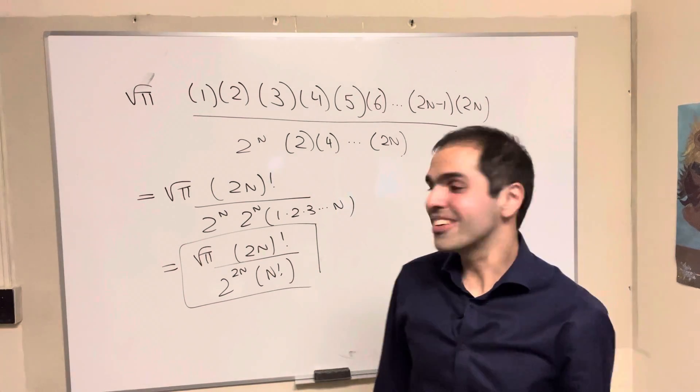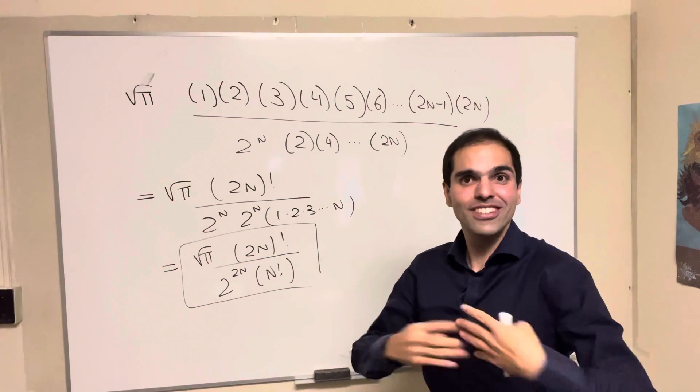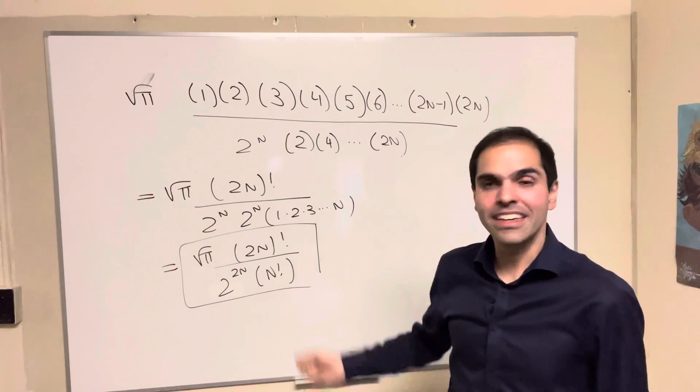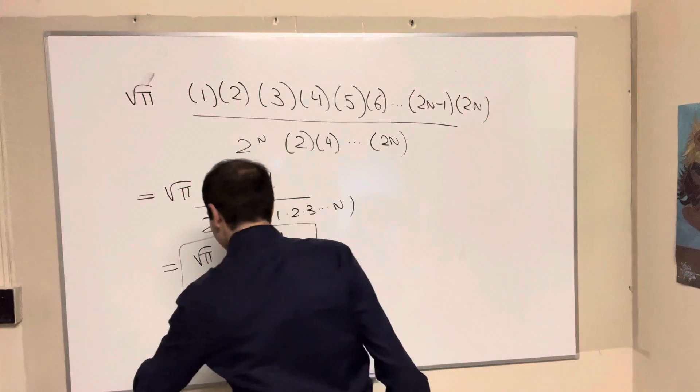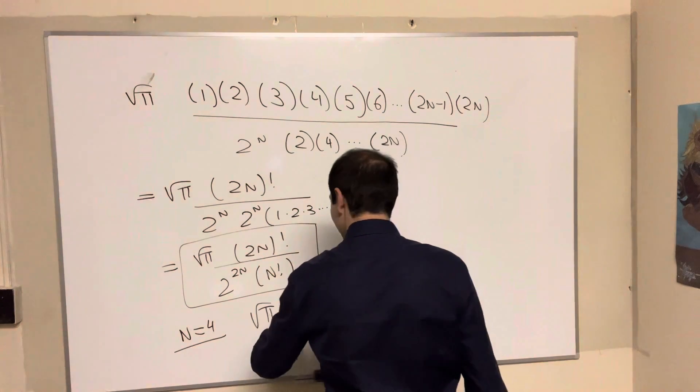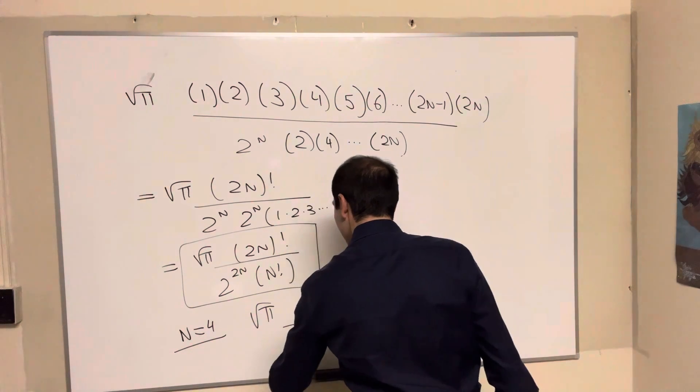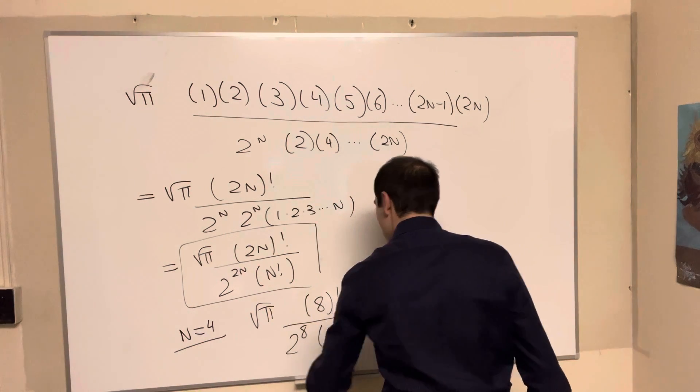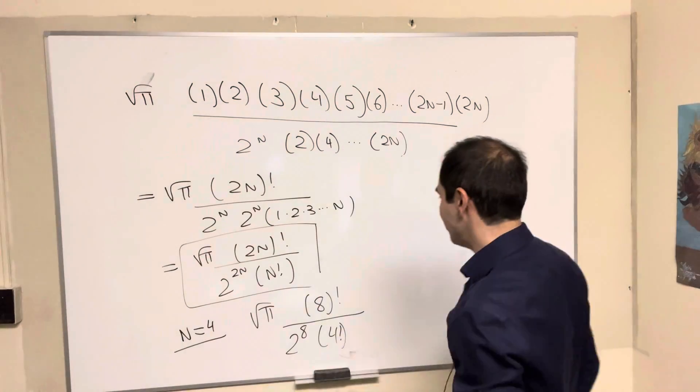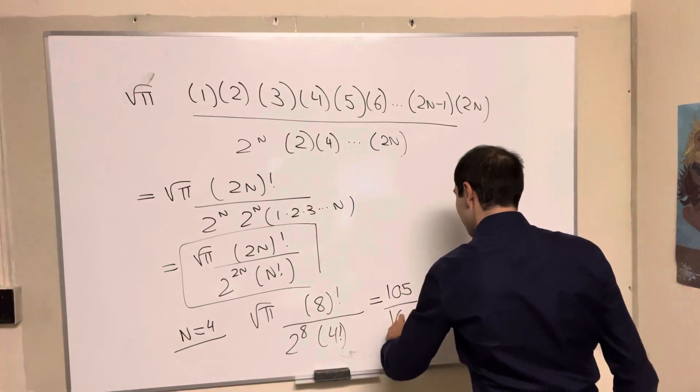And this is our integral, which now has this nice expression. And, of course, let's finish our job, because we started with x to the 8. So now let's plug in n equals 4 here. Then we get square root of pi and then 8 factorial over 2 to the 8 times 4 factorial. And let's see how I've written this down somewhere. Yes, and if you calculate this,